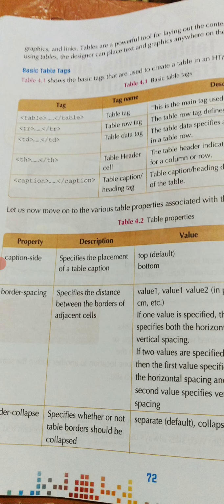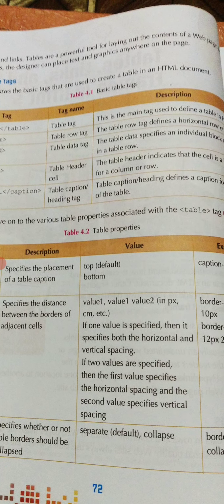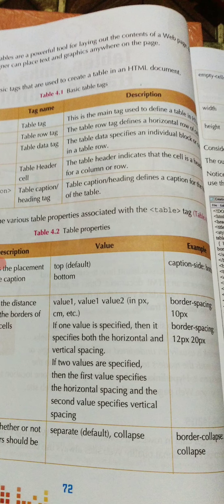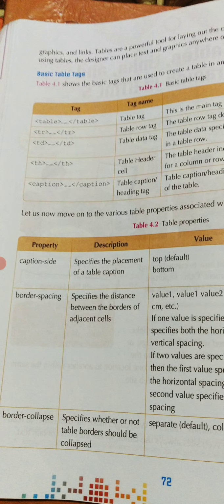The second tag is TR — the table row tag. TR stands for Table Row. The table row tag defines a horizontal row of cells.